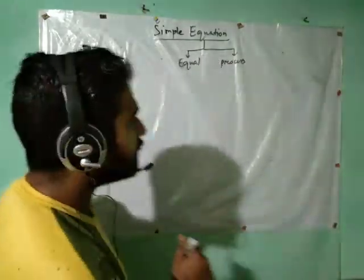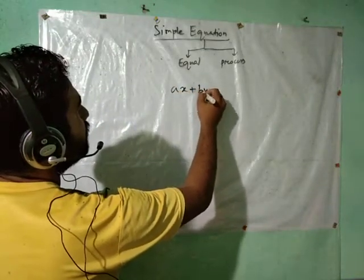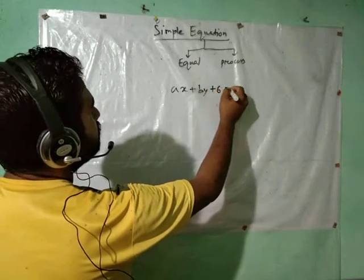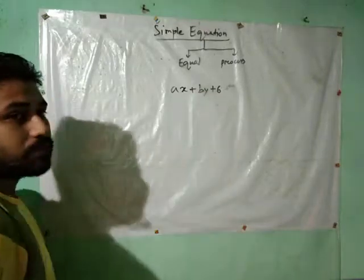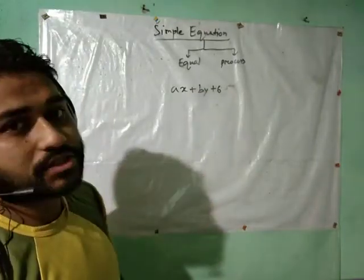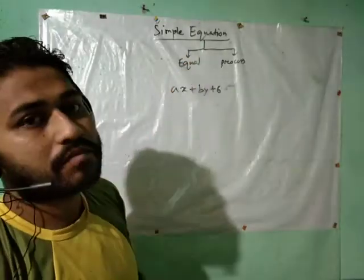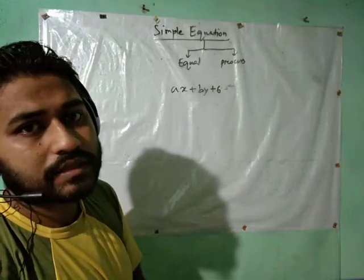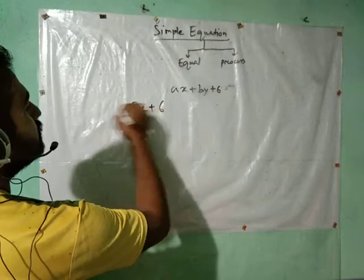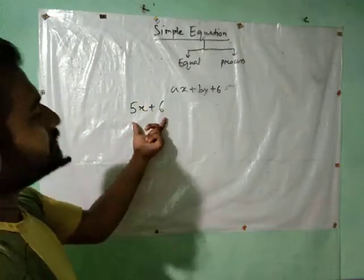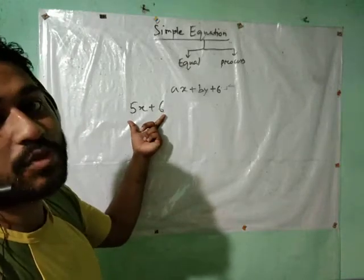For example, Ax + By + 6 = 0 — is that an algebraic expression? Yes, it is an expression. Now, what is the difference between an expression and an equation? Suppose I take another example: 5x + 6. Isn't it an algebraic expression? Yes, it is an algebraic expression. It is not an equation yet. Why? Because no equal symbol is there.